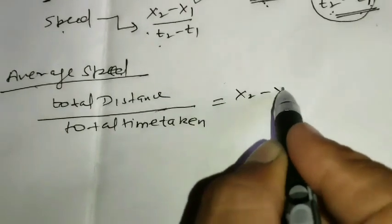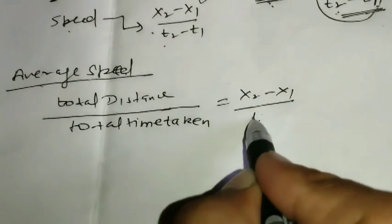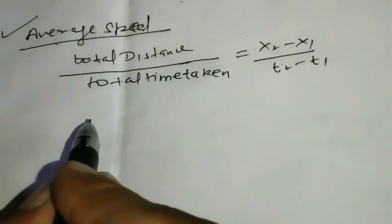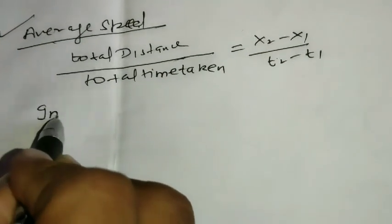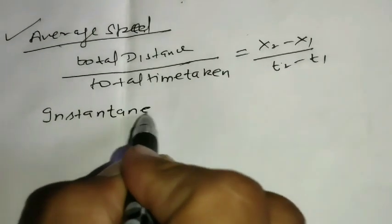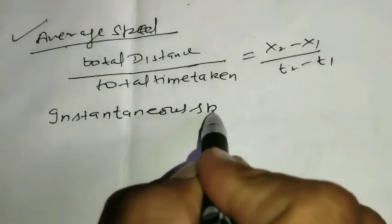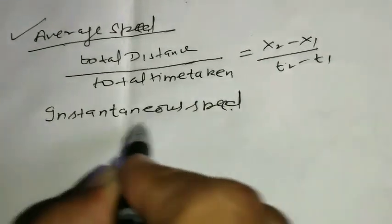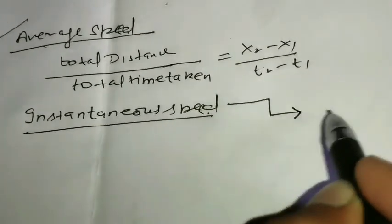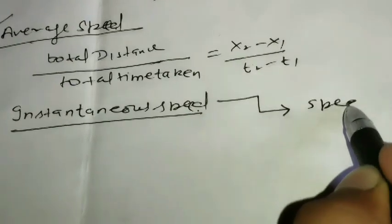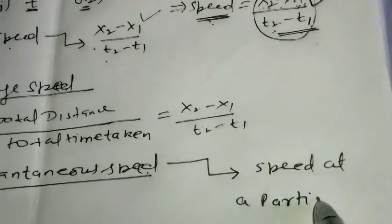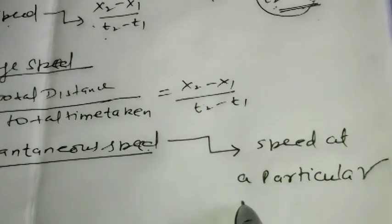So, let us derive another term instantaneous speed. I will define instantaneous speed. So, the basic definition of instantaneous speed is what? Speed at particular instant.